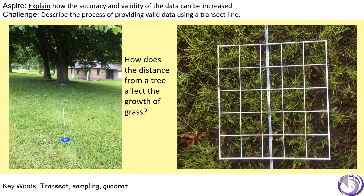How does the distance from a tree affect the growth of grass? We could be measuring a number of factors that change as we move out from under the tree, but to name two very simply: light level, and also the amount of water because of shelter provided by the tree.